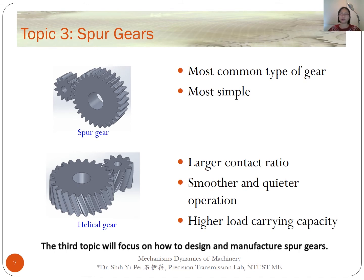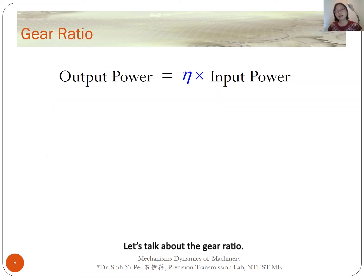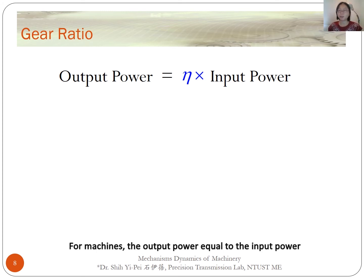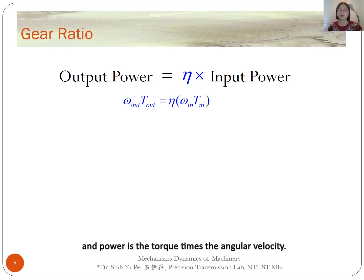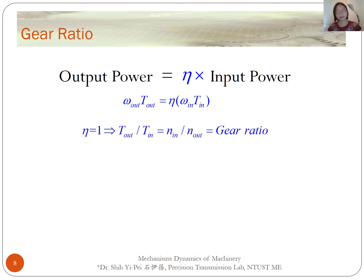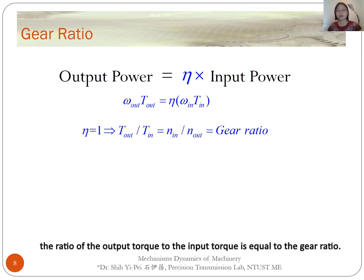Helical gears also have greater tooth strength and a higher load-carrying capacity. The third topic will focus on how to design and manufacture spur gears. Regarding gear ratio: for machines, the output power is equal to the input power times the gear efficiency. And power is torque times angular velocity. If gear efficiency is 1, the ratio of output torque to input torque equals the gear ratio.